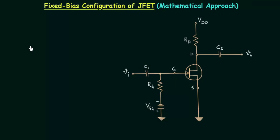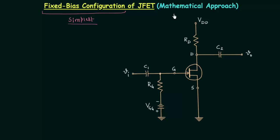In the previous lecture we saw the introduction of FET biasing, and now in this presentation I will explain the fixed bias configuration of JFET. Fixed bias configuration is the simplest biasing arrangement, and we will bias an N-channel JFET. We will use the mathematical approach to find out the operating point. To calculate the operating point we have two approaches: the mathematical approach and the graphical approach. In this lecture we will follow the mathematical approach, and in the next lecture we will follow the graphical approach.